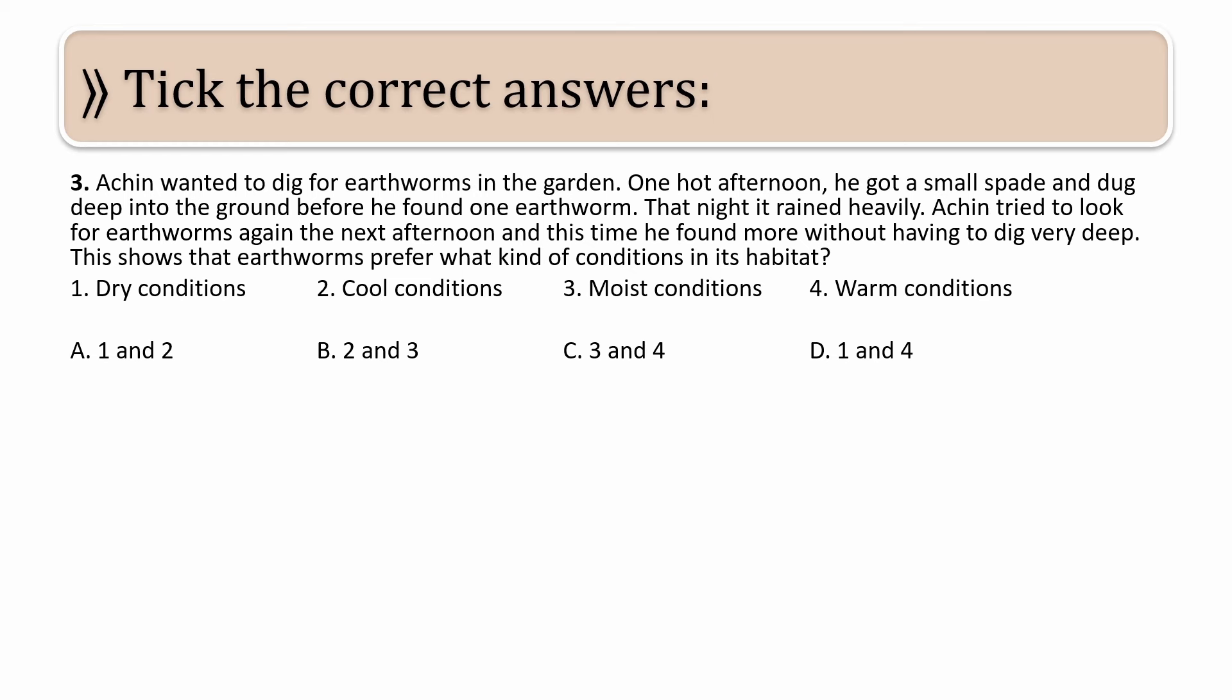Now what is 1 and 2? Dry condition and cool condition. What has been observed? That after it has rained, the number of earthworms increased. So is it B, that is 2 and 3, cool condition and moist condition? Or is it C, 3 and 4, moist condition and warm condition? Or is it D, 1 and 4, that is dry and warm condition?